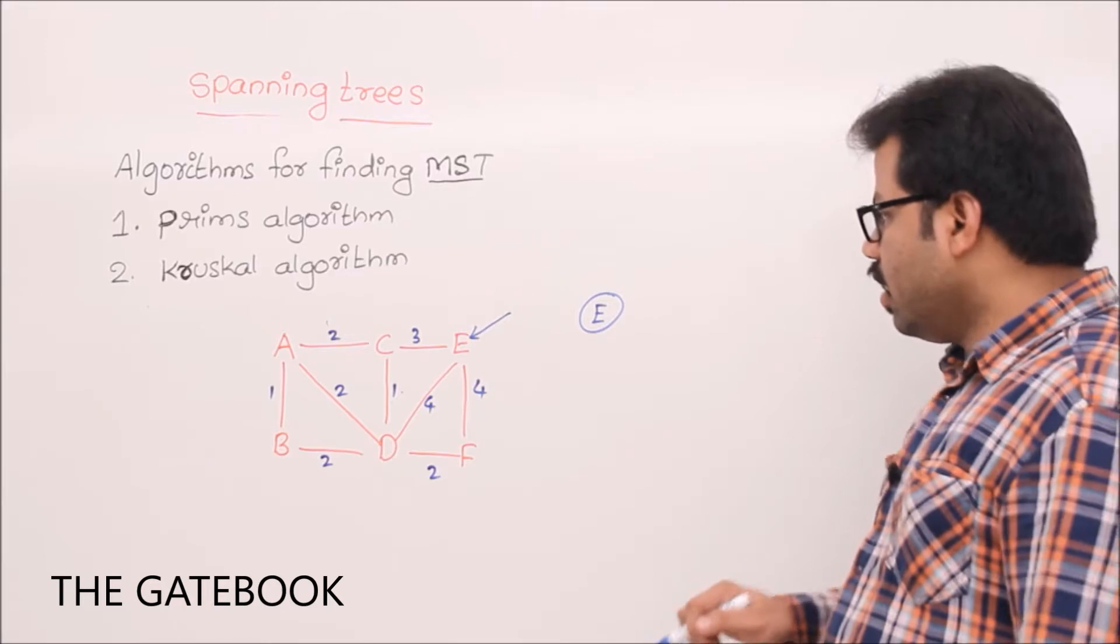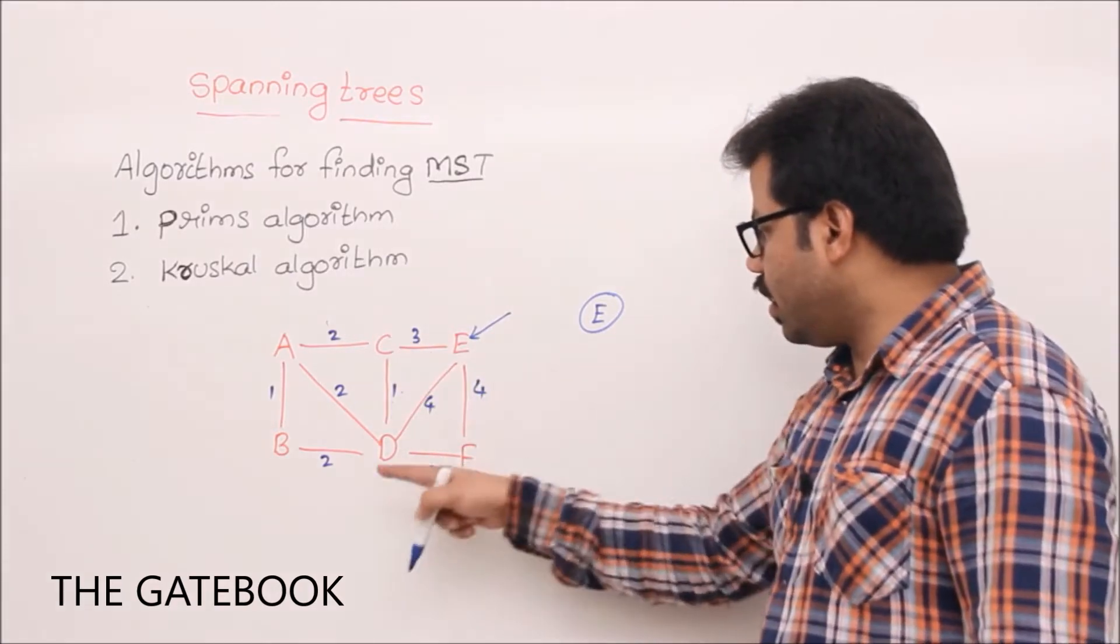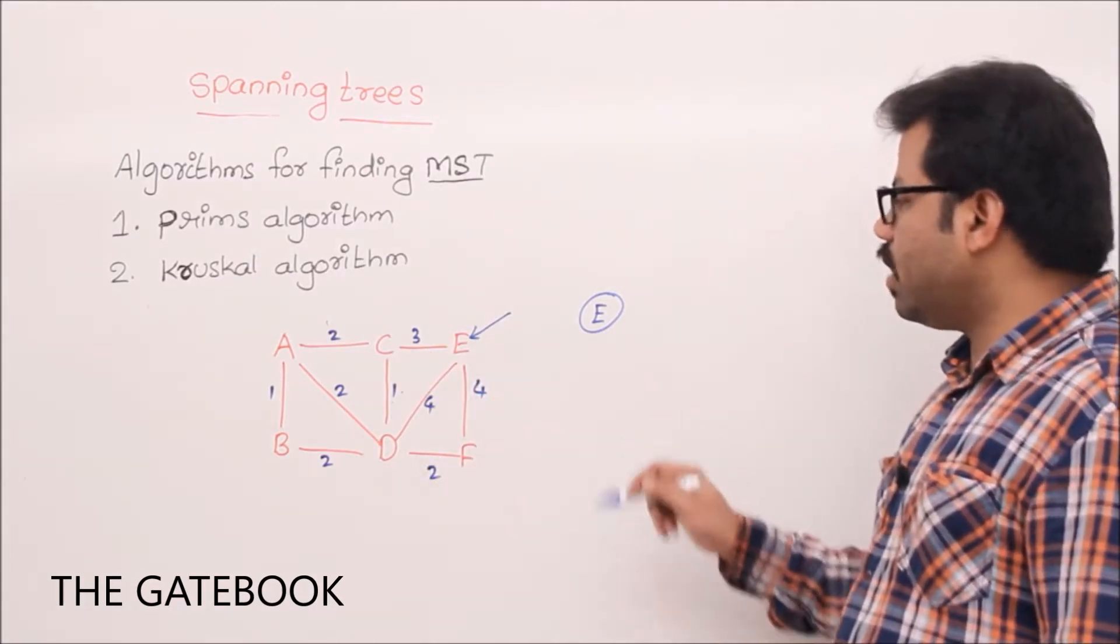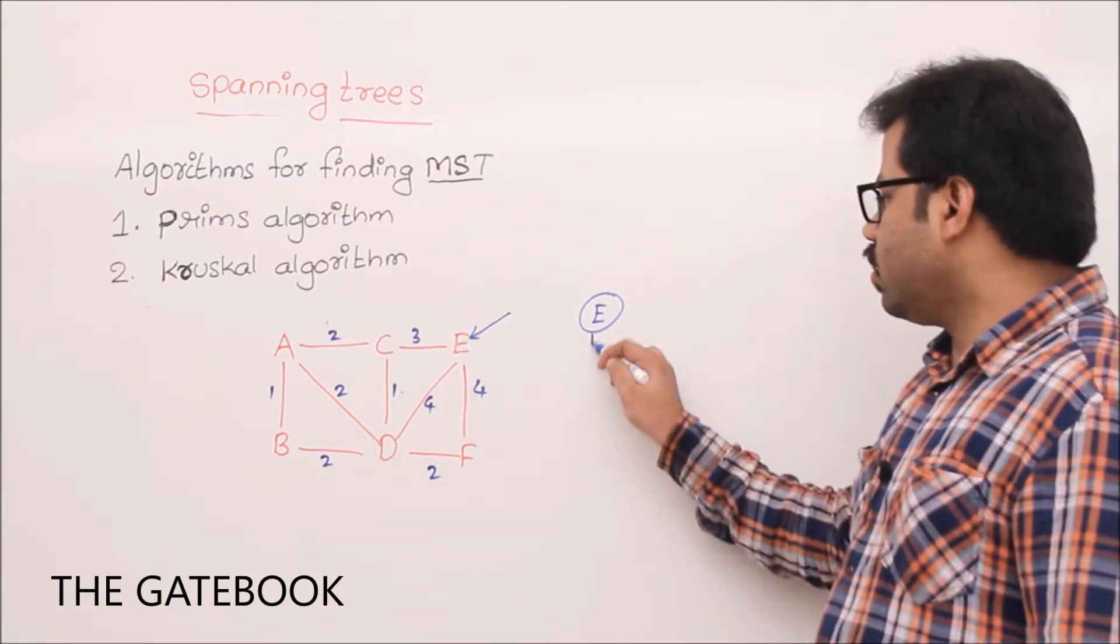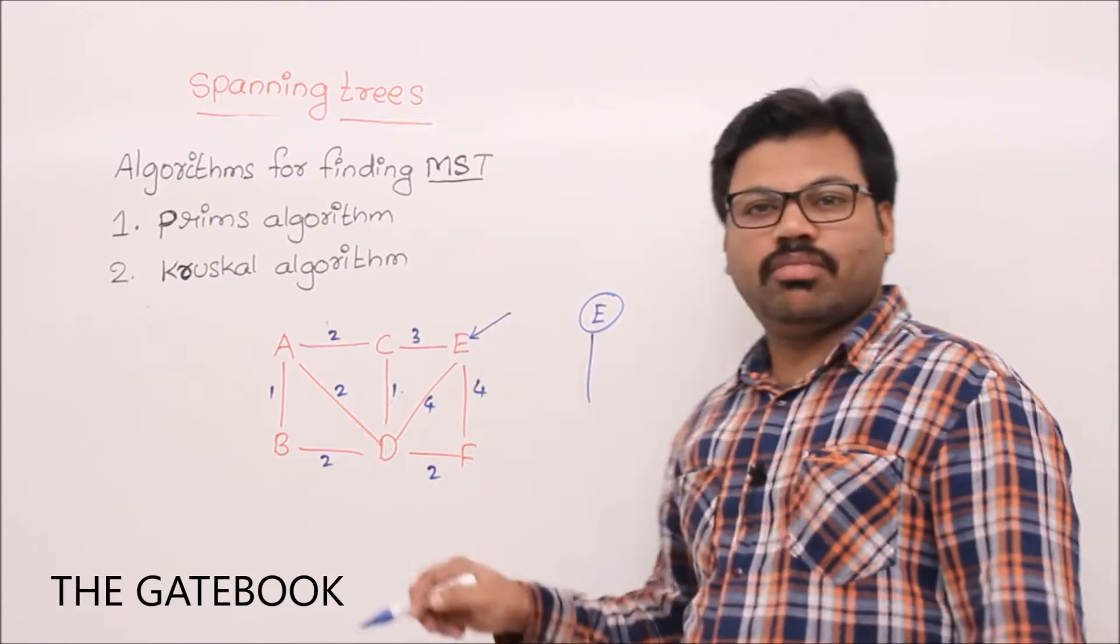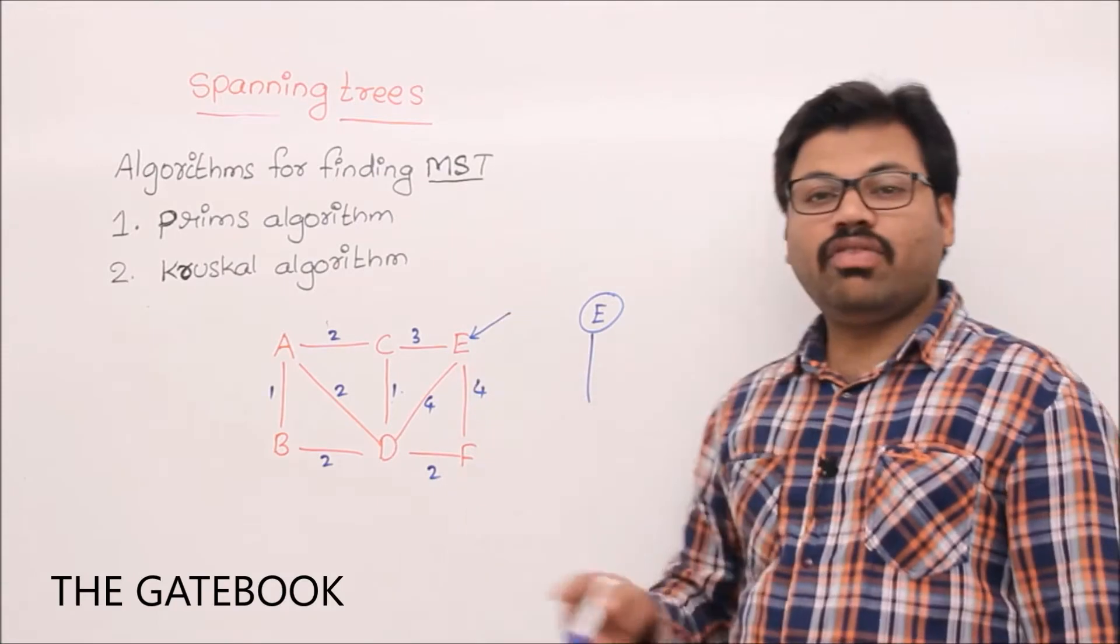So, if I started E, then what are the visible edges we have? EC, ED, EF, correct? Out of them, which one is minimum? EC, correct? So, it looks like 3 is very large value, but still...